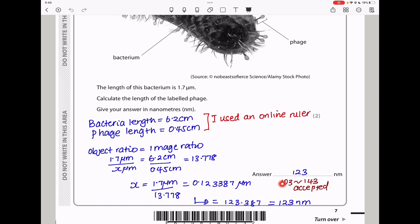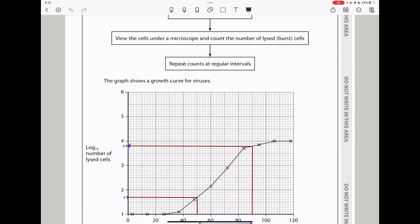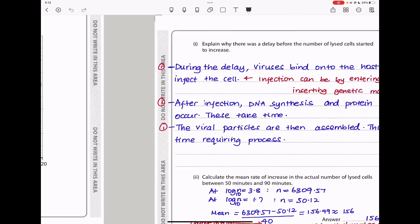Here they say viruses can be cultured and a growth curve can be produced. We grow the host cells of the virus on egg and then add the viruses to the host cells, then view the cells under a microscope and count the number of lysed or burst cells. You repeat the counts at regular intervals. The graph shows the growth curve of the viruses. You can see this is the growth curve, the log to base 10 number of cells that are lysed, and then the time after adding the viruses to the cells, in minutes.